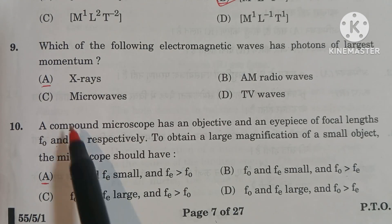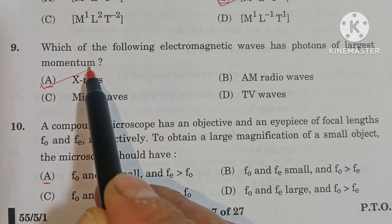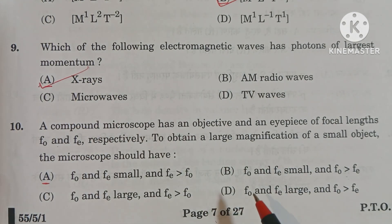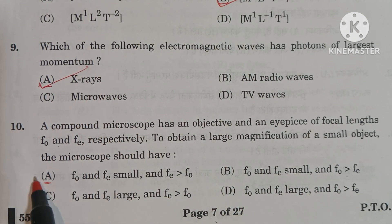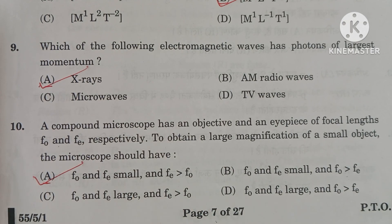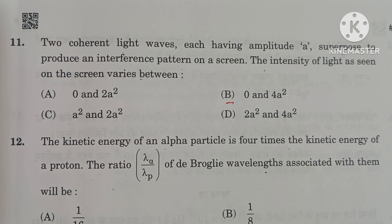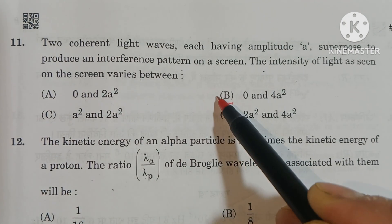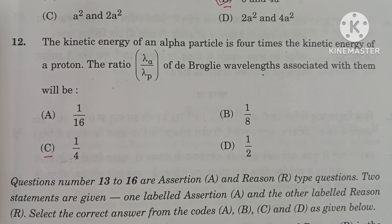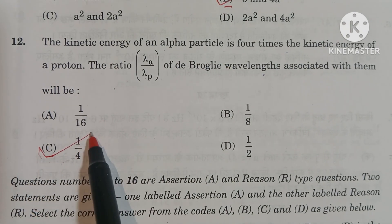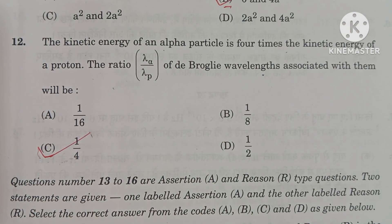In question number 9, A option is the correct option. And in question number 10, also A option is the correct option. In question number 11, B option is the correct option. In question number 12, C option is the correct option.